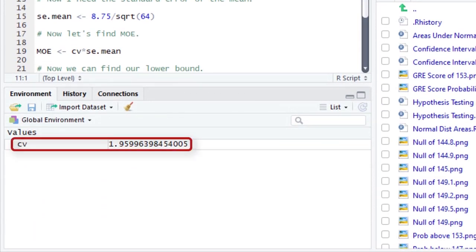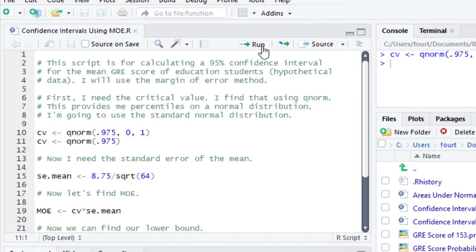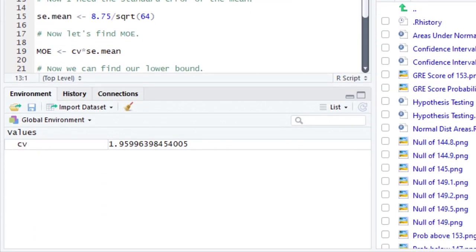Here's our critical value, just about 1.96. Now I want to show you that if we had not put in the mean and standard deviation, but just said QNORM(.975), we get the same value. That's because if you don't enter a mean and standard deviation to the QNORM or PNORM functions, they assume you want to use the standard normal distribution.